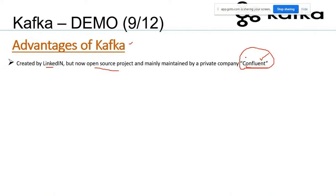In Confluent there is an open source community edition and an enterprise version. You can download the code from Confluent's website and deploy it in real-time projects for live applications at no cost with the open source version. The drawback is there is no support from Confluent — whatever issues you face, you have to fix them on your own.